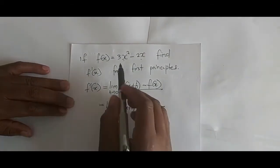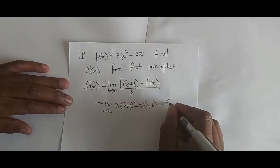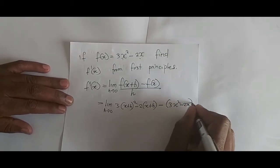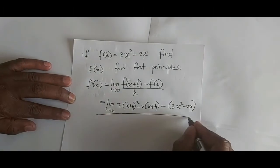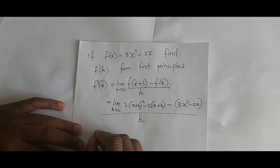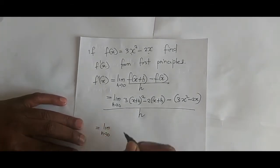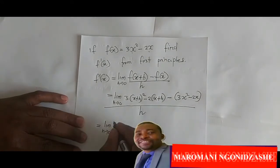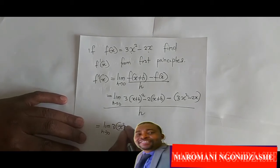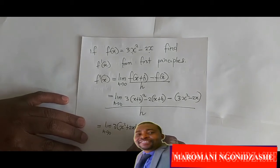Then we subtract f of x, which is 3x squared minus 2x, inside the bracket, everything over h. This is now equal to the limit as h approaches 0, and we expand the squared term: 3 into x squared plus 2xh plus h squared, close bracket.